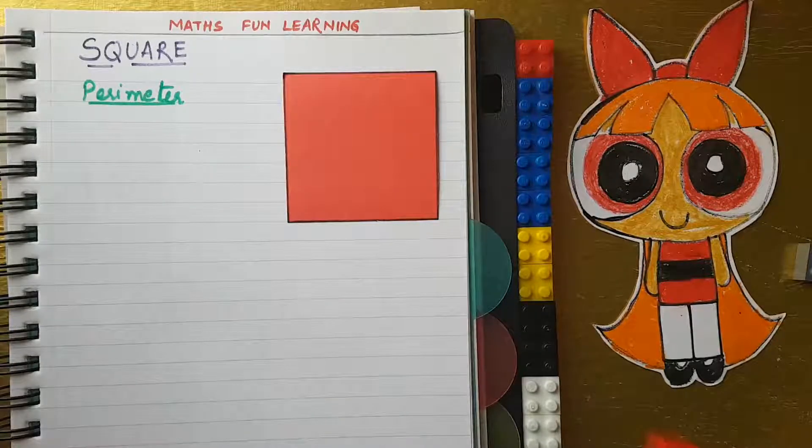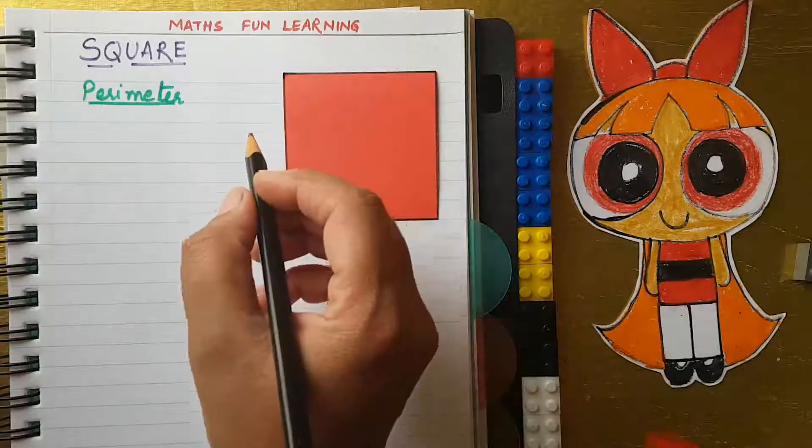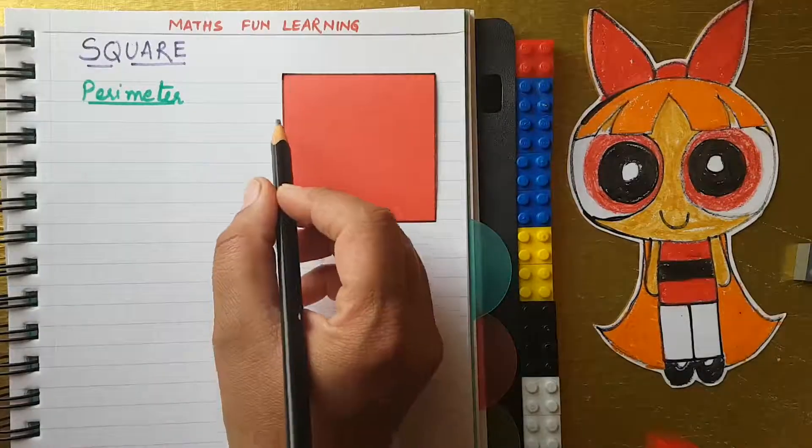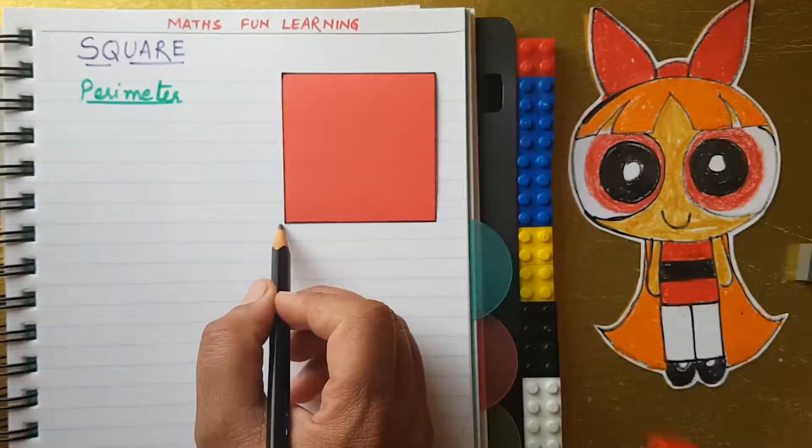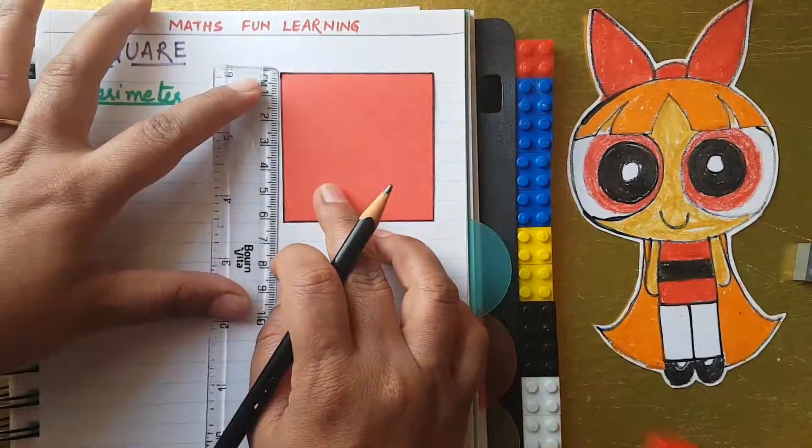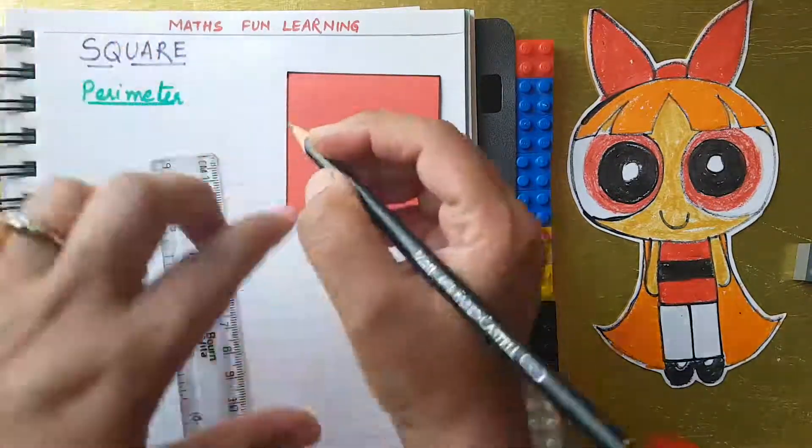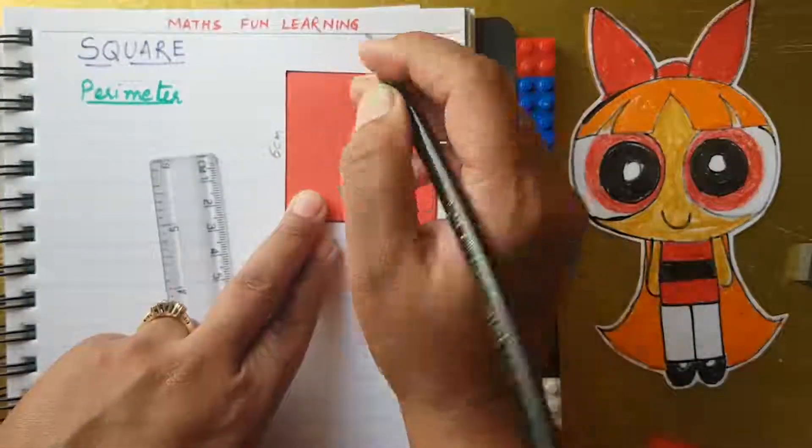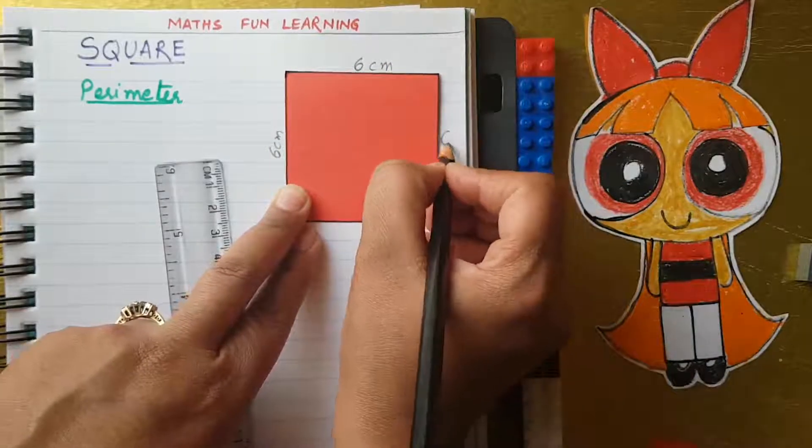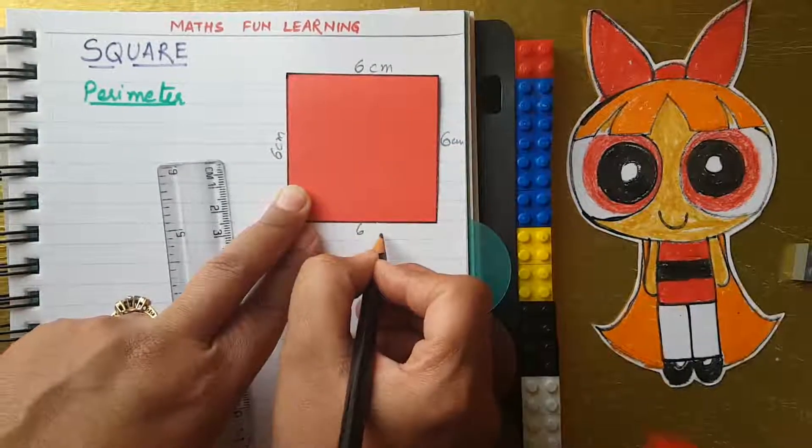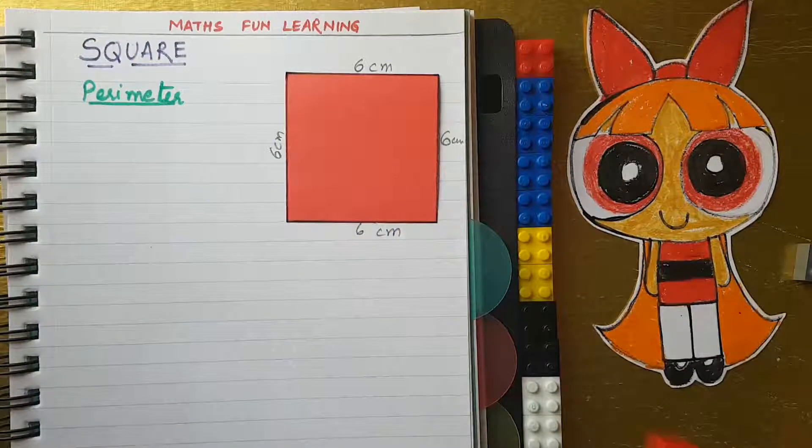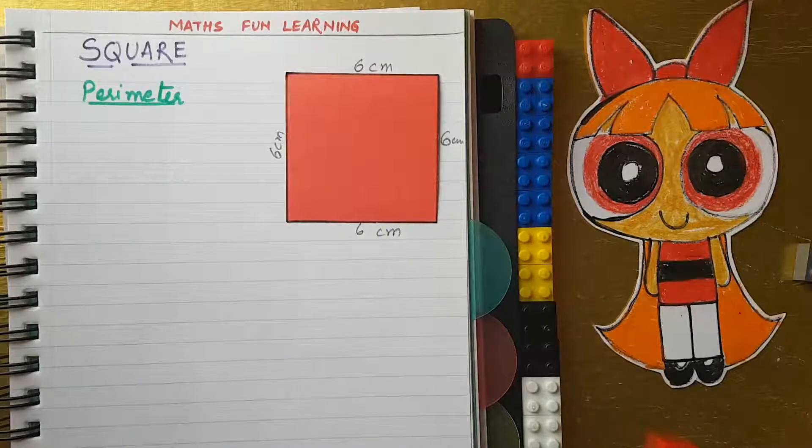You all know that square has all sides equal. If you can see, this one side is 6 centimeters. So I will write here it is 6 centimeters. That means other sides are also 6 centimeters.